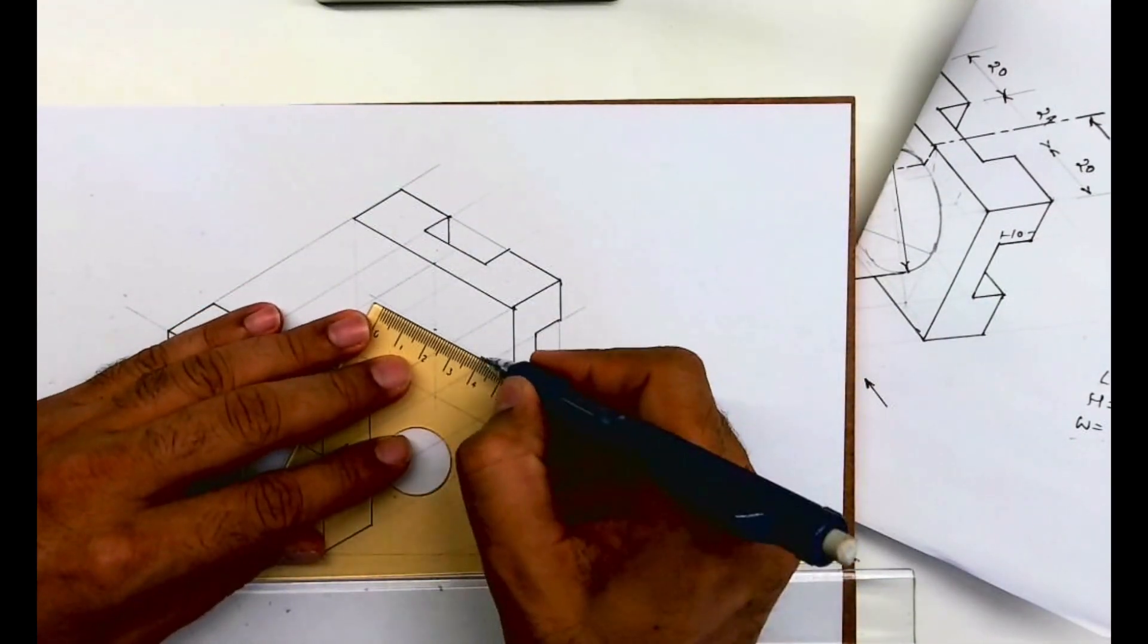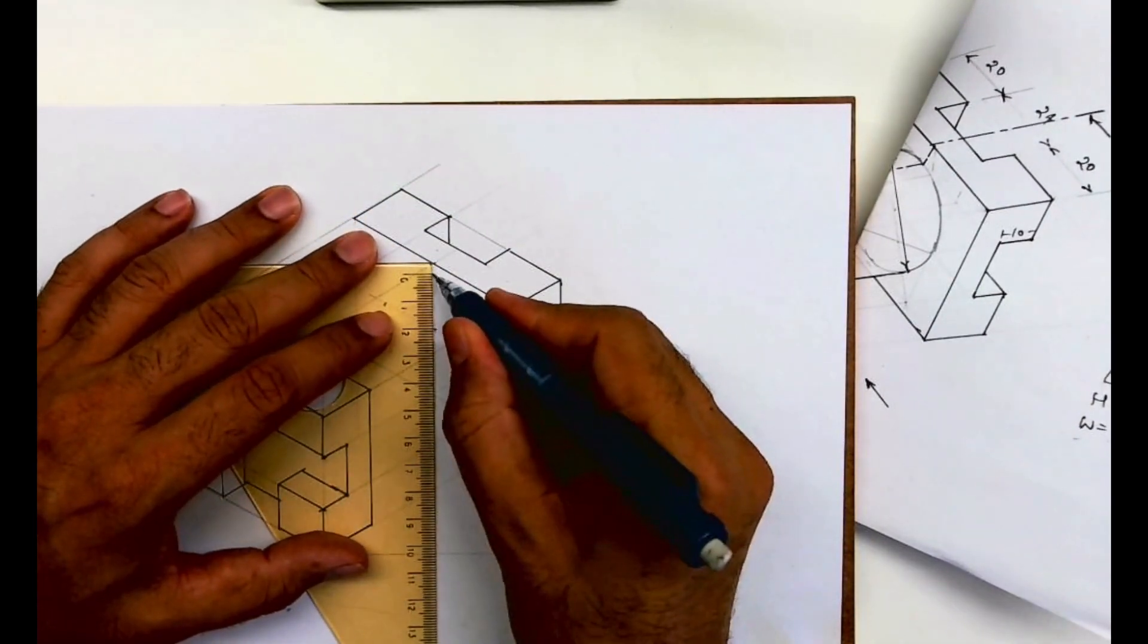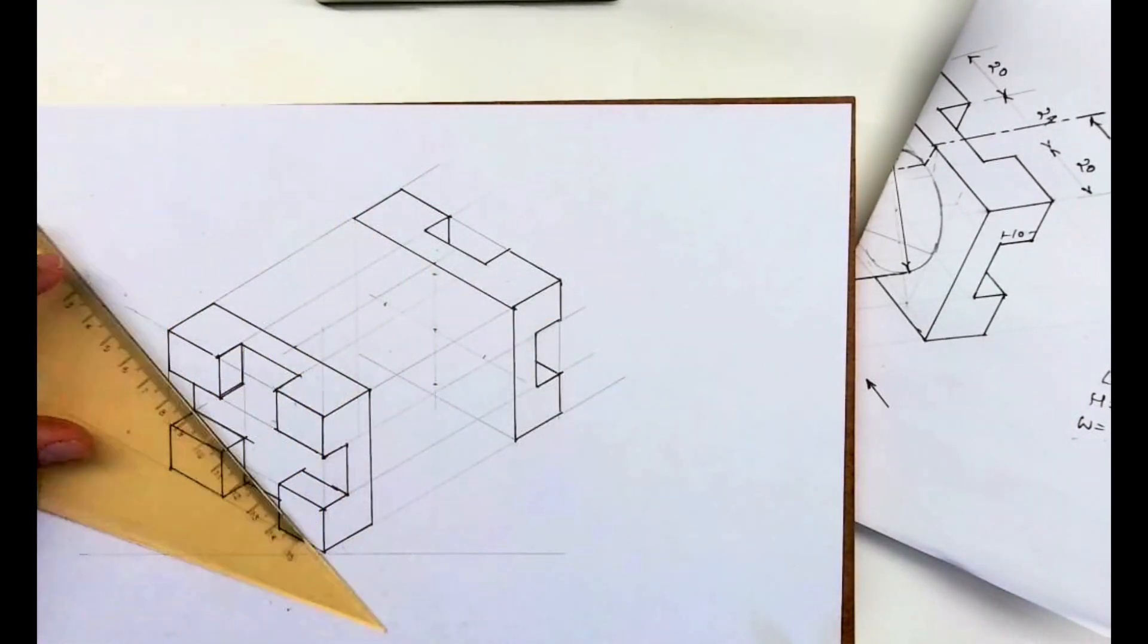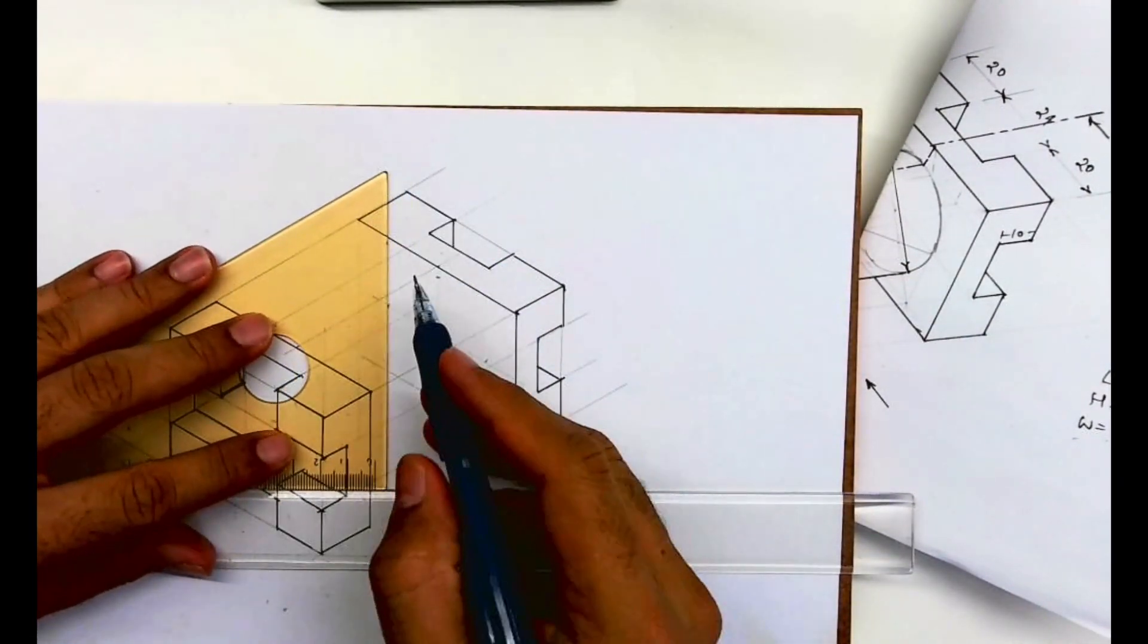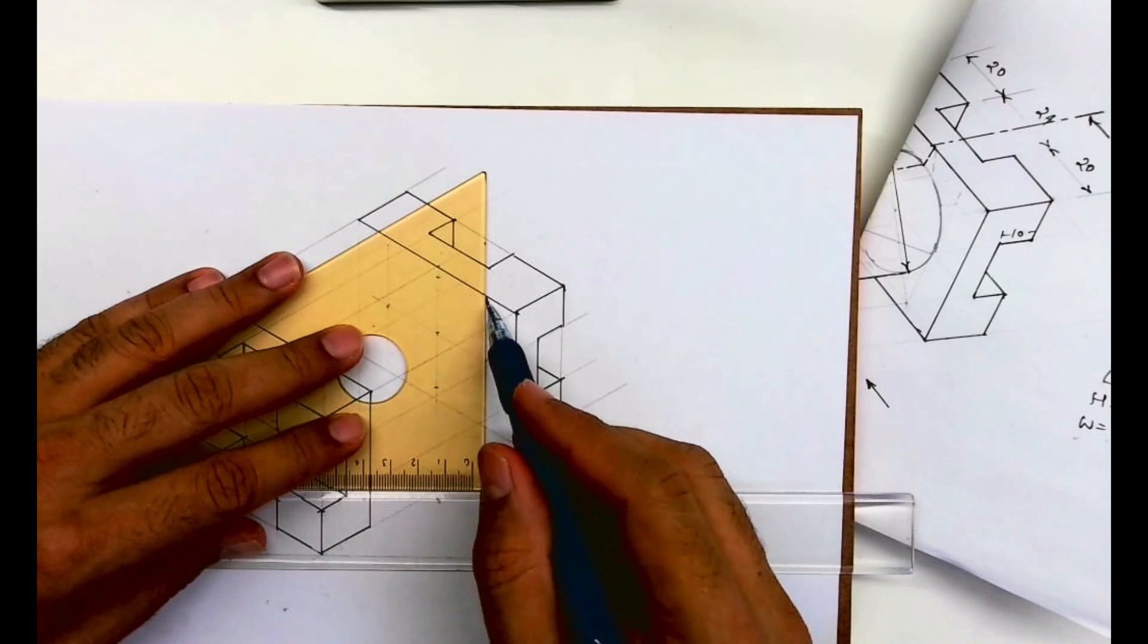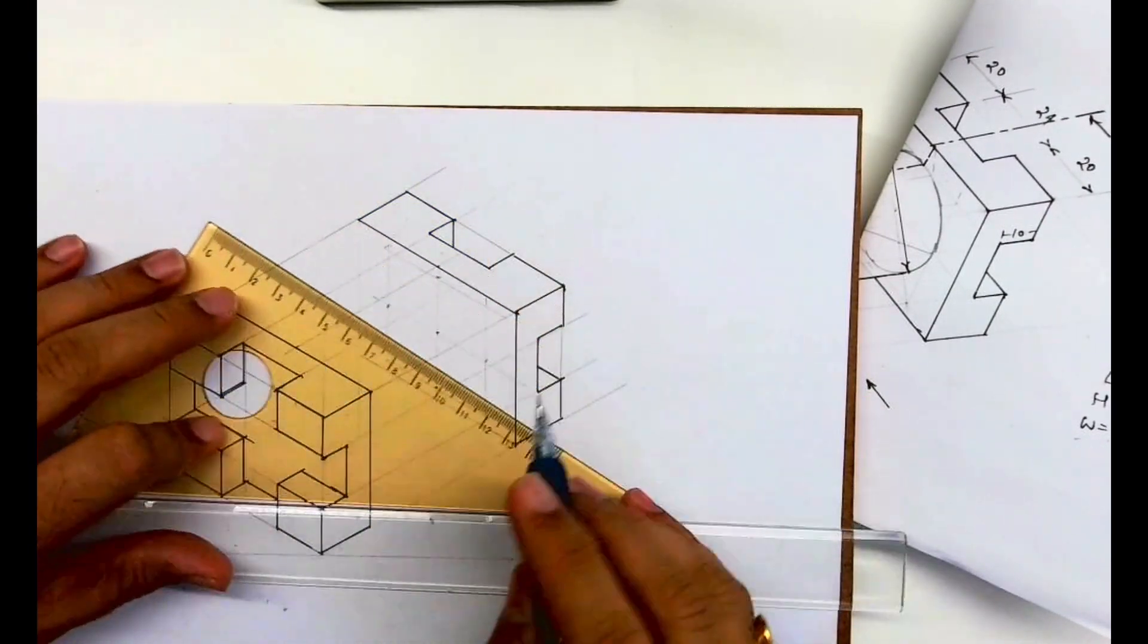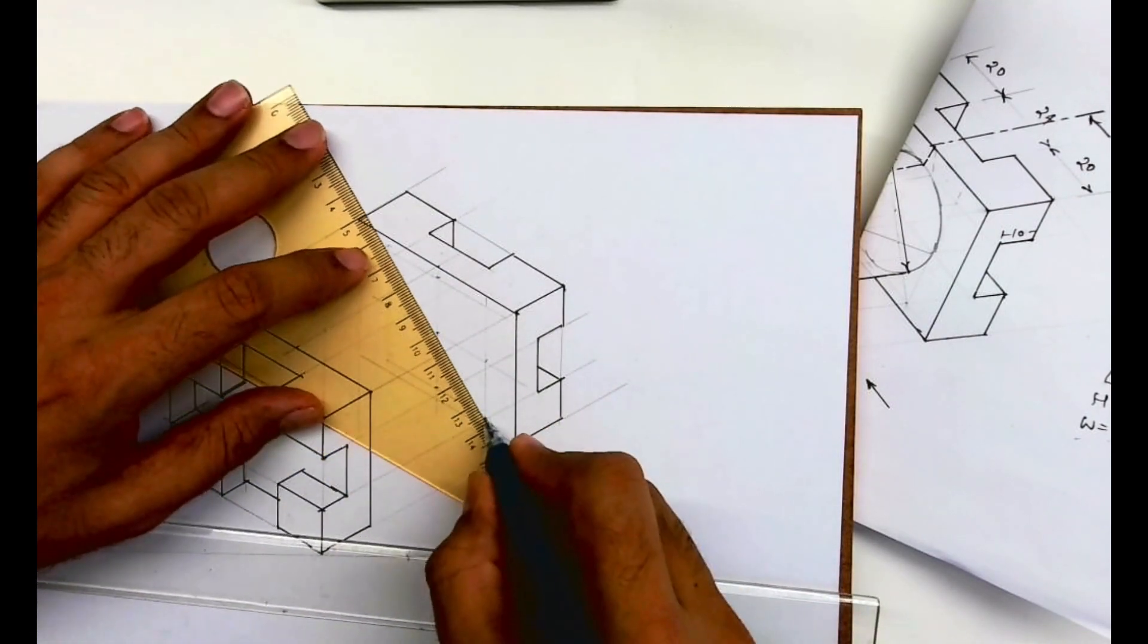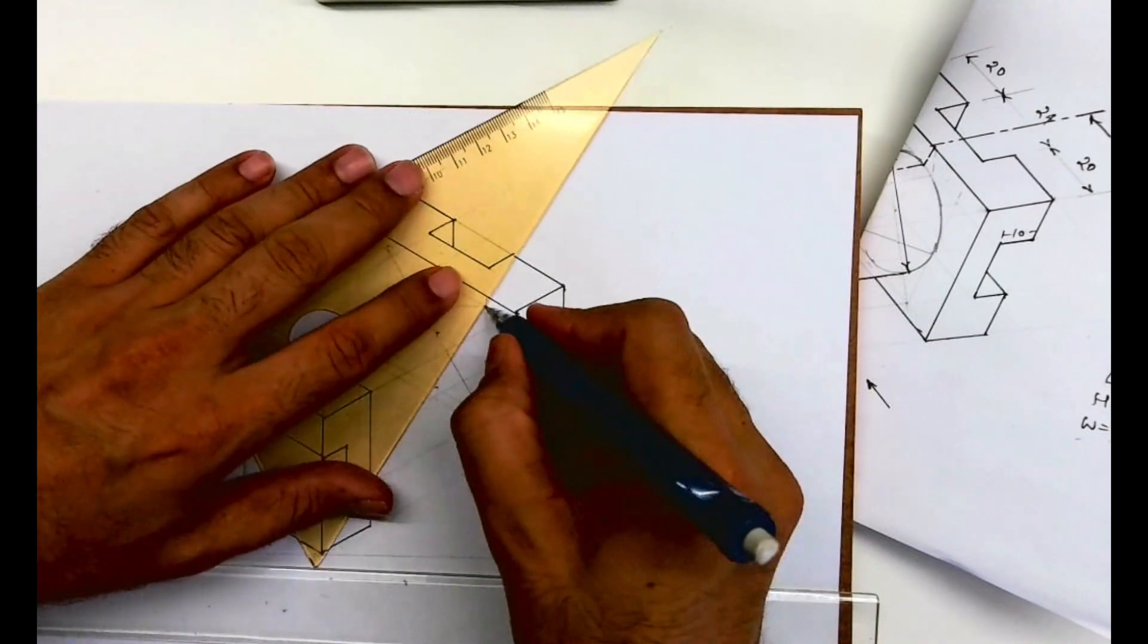So I'll mark 20, 20, 20. See, so with four-center method we can draw this longest diagonal, then from here we'll join this way.